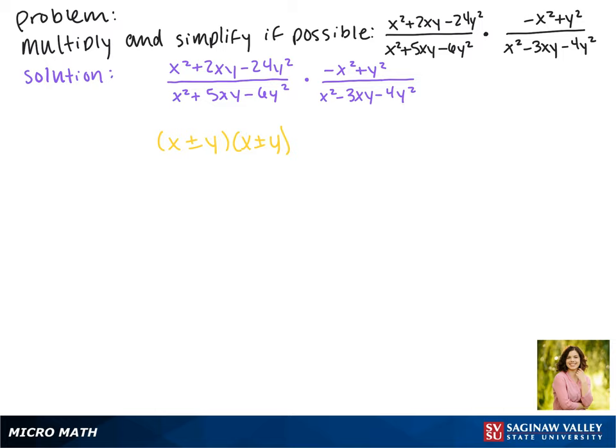To factor the first trinomial we'll still look at the factors of negative 24 that make 2. That's positive 6, so we say x plus 6y, and negative 4, so we say minus 4y.